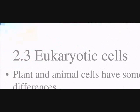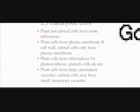Next, let's look at eukaryotic cells. There are two main types: plant and animal cells, and they have some differences. Plant cells have a plasma membrane and a cell wall, while animal cells only have a plasma membrane. Plant cells have chloroplasts for photosynthesis, whereas animal cells do not. Plant cells have large permanent vacuoles, and animal cells may or may not have small temporary vacuoles.